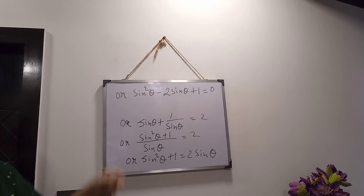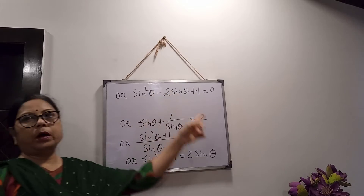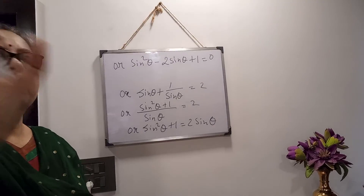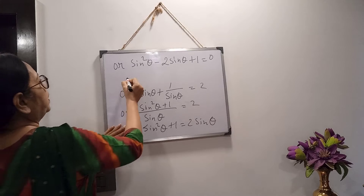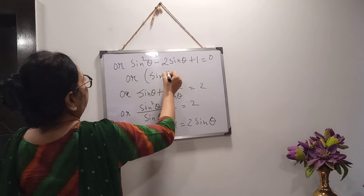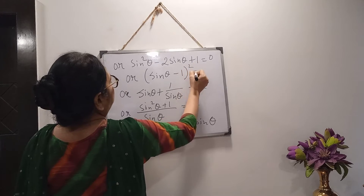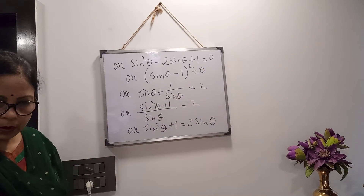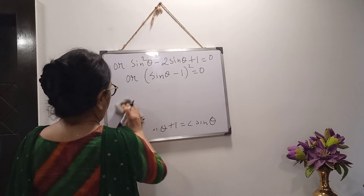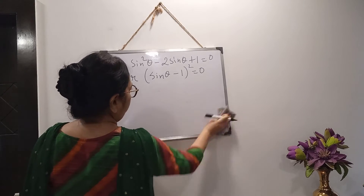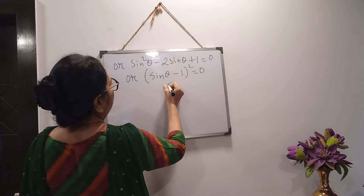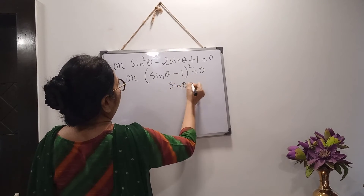Now this is the formula of A² - 2AB + B² = 0, so we will apply that (A - B)² form. So (sinθ - 1)² = 0. From here you will get the value of sin θ. Sin θ is coming 1.